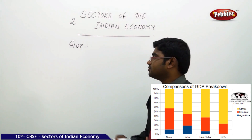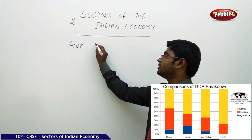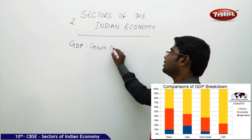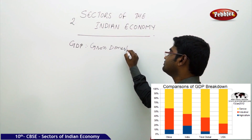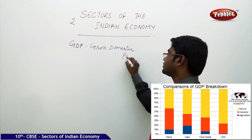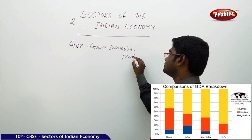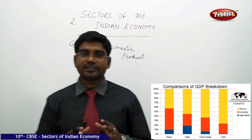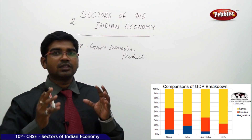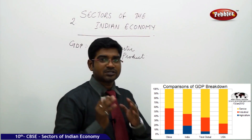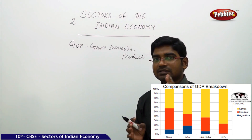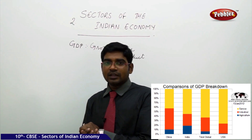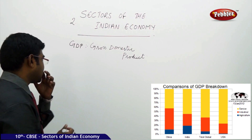So what is GDP? GDP is the gross domestic product. The gross domestic product is nothing but the total final output sum, the total of all the three sectors output of income. Let us take the calculation terms.